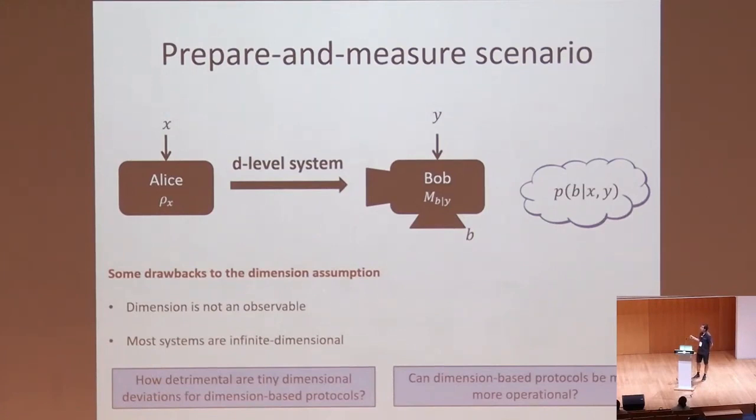There are many other ways of approaching these communication settings than using dimensions, because there is quite some reason to want to leave the dimension framework. There are some notable drawbacks to a dimension-based approach. The first one is that the dimension is not an observable. If I give you a setup, there is no measurement you can perform so that you learn the dimension of Hilbert space. The second problem is that most real physical systems are not qubits or qudits.